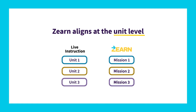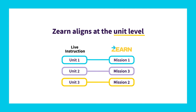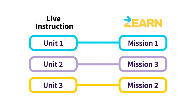So if you're using Zearn as your core curriculum, your live instruction is already aligned to the sequence of the Zearn missions. If you're using another high quality curriculum for your live instruction, you'll assign students to the grade level mission in Zearn that best aligns with your current unit. Zearn is designed for students to work through the mission at their own pace, moving on to the next lesson as soon as they successfully complete the prior lesson. That means you don't need to align Zearn lessons and your live instruction on a daily basis.